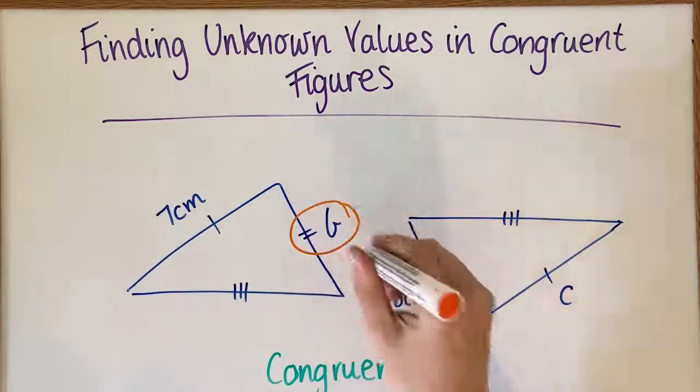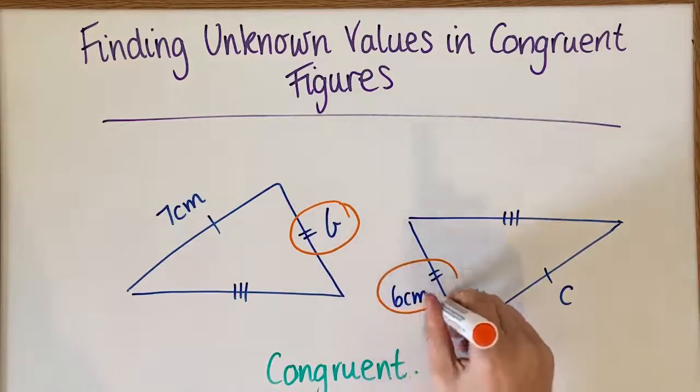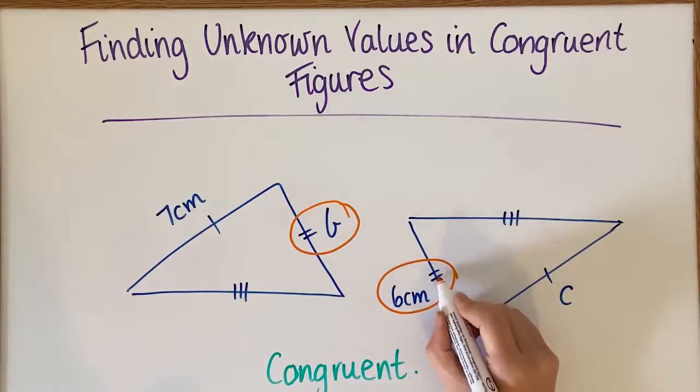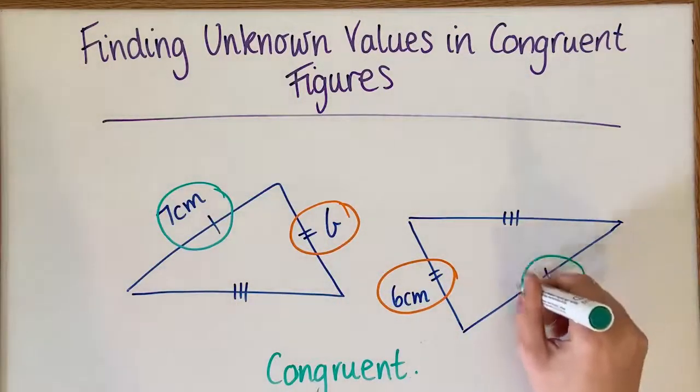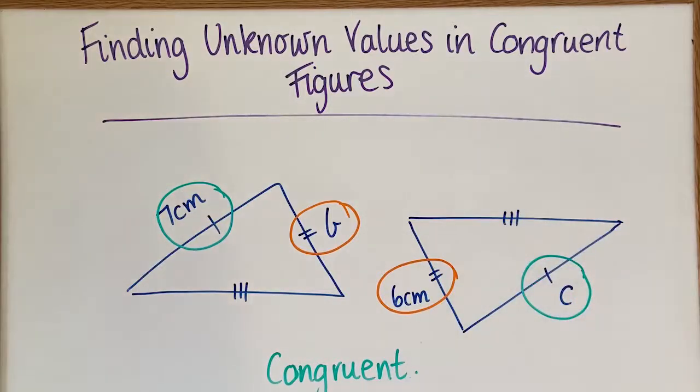Now, we've got these side length measurements on there which show which ones go together. So this one has two lines. So that pairs with another side that has two lines. I'm talking about these lines here. One, two, one, two. Now this seven centimetres only has one line. So it's going to pair with the other side that only has one line.